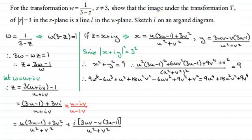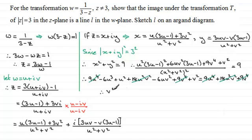Tidying this up, quite a bit cancels out. 9u to the 4 cancels with 9u to the 4. We've also got 18u squared v squared on both sides, so they cancel. The same is true with 9v to the power 4 on both sides. Simplifying therefore gives us v squared, then minus 6uv squared, minus 6uv squared, then plus u squared, then minus 6u cubed, and this equals 0.